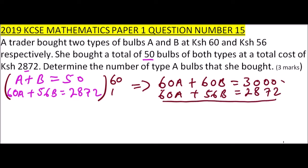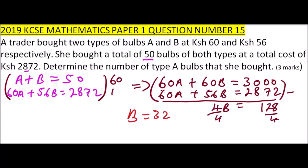We subtract the second equation from the first. The 60a terms cancel to zero. 60b minus 56b gives 4b, and 3000 minus 2872 gives 128. Dividing both sides by 4, we get b equals 32.